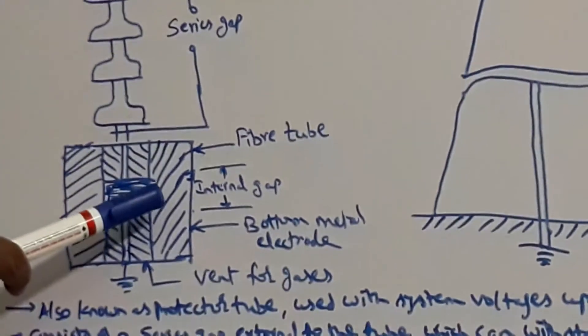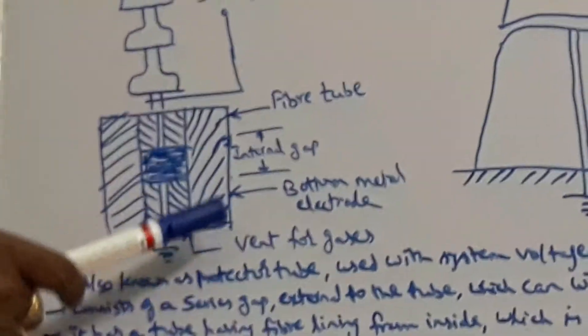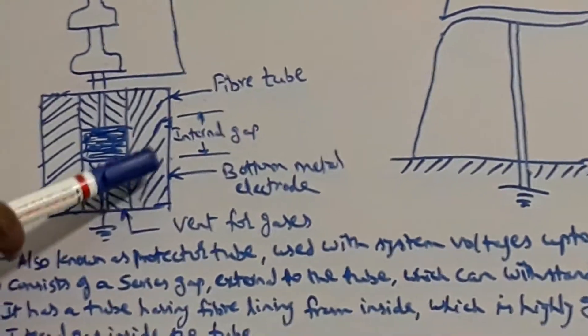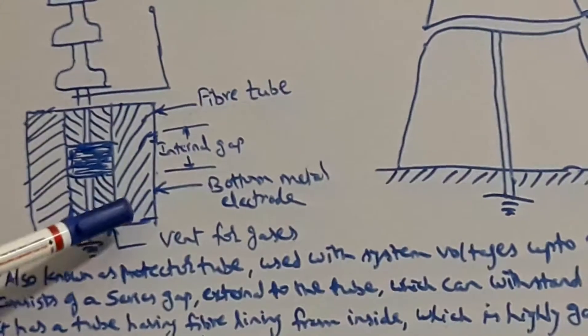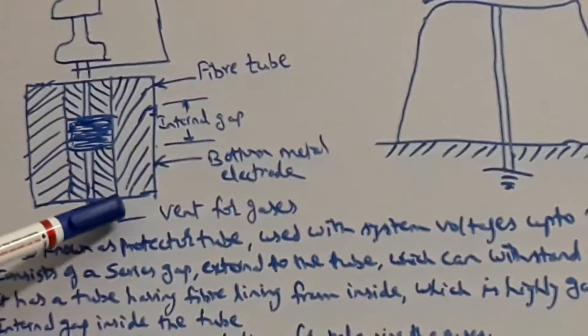Inside the fiber tube, we have the internal gap consisting of two electrodes. One is connected to the series cap, the other electrode is connected to the earth.